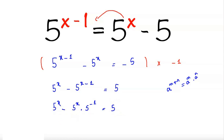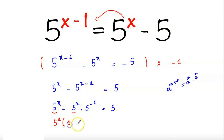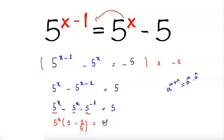Now we can factor out 5 to the power x, so 5 to the power x times the quantity 1 minus 5 to the power minus 1, which is 1 over 5, equals 5.